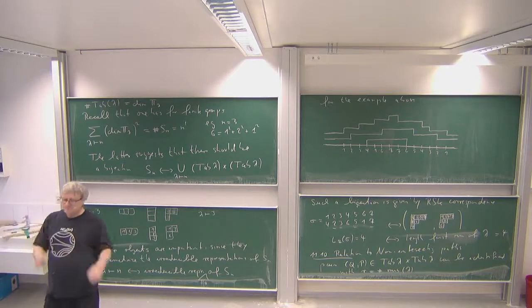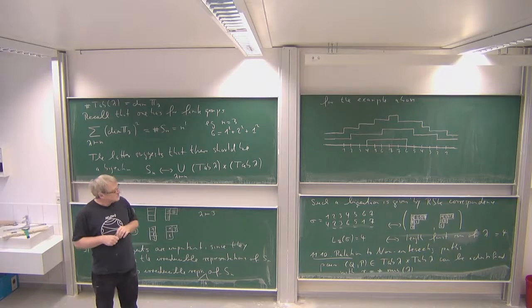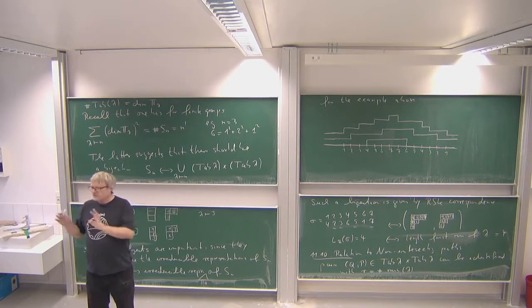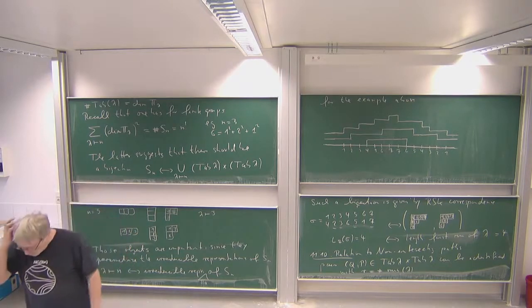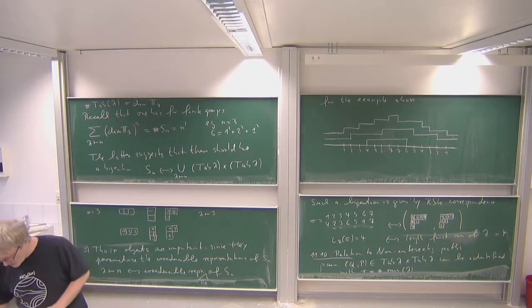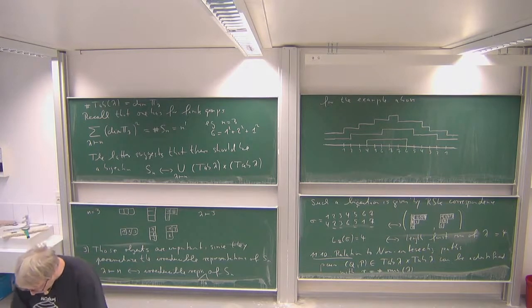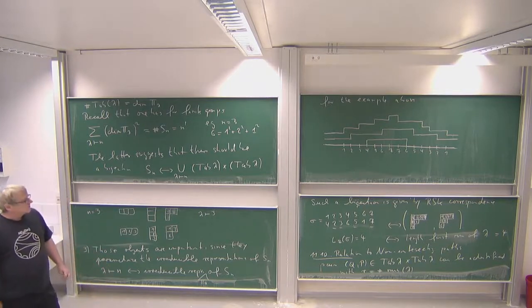So such a pair of Young tableaux can be identified with non-intersecting paths. We then apply the Lindström-Gessel-Viennot theorem, which tells us that non-intersecting paths correspond to determinants of certain matrices. This brings us to a setting similar to random matrices, and then — after hard work — one can show the kernel converges to the Airy kernel in the right scaling.